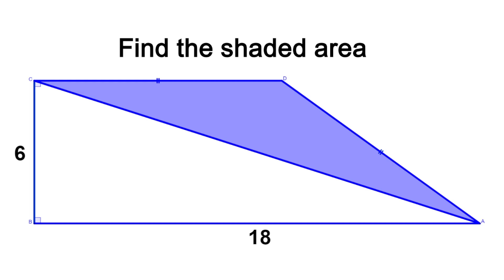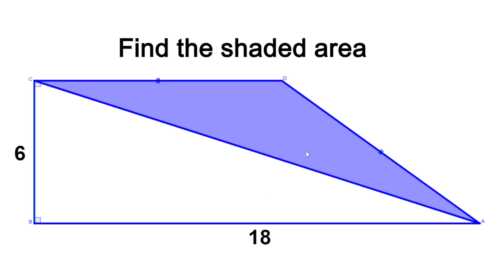We know that the height of our trapezoid is 6 and that its large base measures 18. We also know that the length of segment CD is equal to that of segment AD. From this we can conclude that triangle ACD, our blue triangle, is in fact an isosceles triangle.